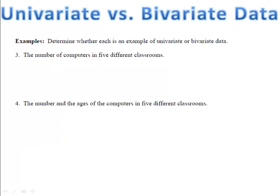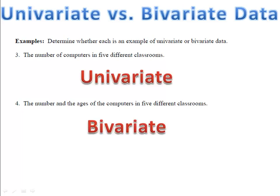In examples 3 and 4, we want to determine whether these are univariate or bivariate data. In number 3, we've recorded the number of computers in several different classrooms — that's univariate data, because we've simply gone into each room and written down how many computers are there. In example 4, we added a second column: the number and the age of the computers in the classrooms. Here we have two columns — number of computers and age — and that's bivariate data.